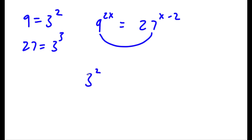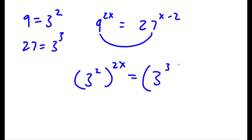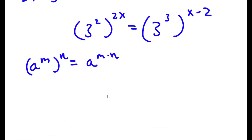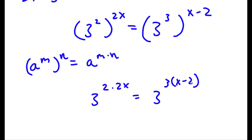So now if I do this, I get 3 to the power of 2 to the power of 2x, is equal to 3 to the power of 3 to the power of x minus 2. Now, if I have something in the form a to the power of m to the power of n, this is equal to a to the power of m times n. So 3 to the power of 2 to the power of 2x equals 3 to the power of 2 times 2x, and this is equal to 3 to the power of 3 times x minus 2.